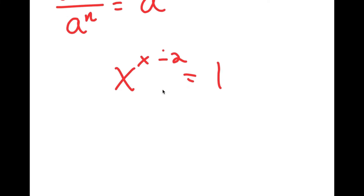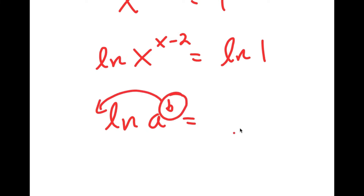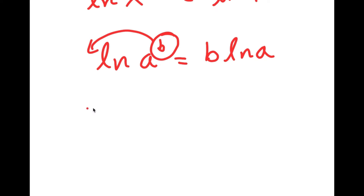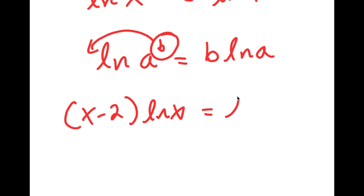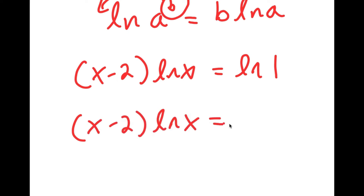Now I'm going to take the natural log on both sides. I get ln of x to the power of x minus 2 is equal to ln of 1. The reason I did this is because logarithms have a special property where if I have something in the form ln a to the power of b, I can simply move the exponent b to the front — this is the same thing as b times ln a. So I have x minus 2 times ln x is equal to ln 1. Since ln 1 is equal to 0, I get x minus 2 times ln x is equal to 0.